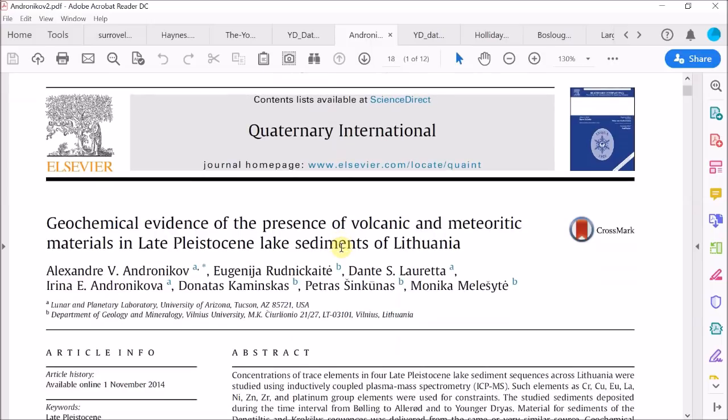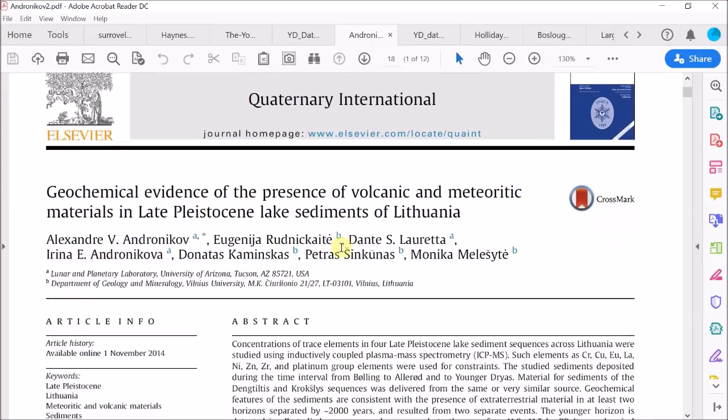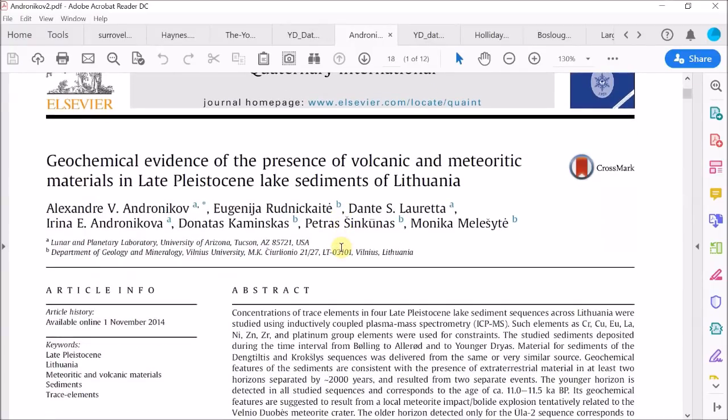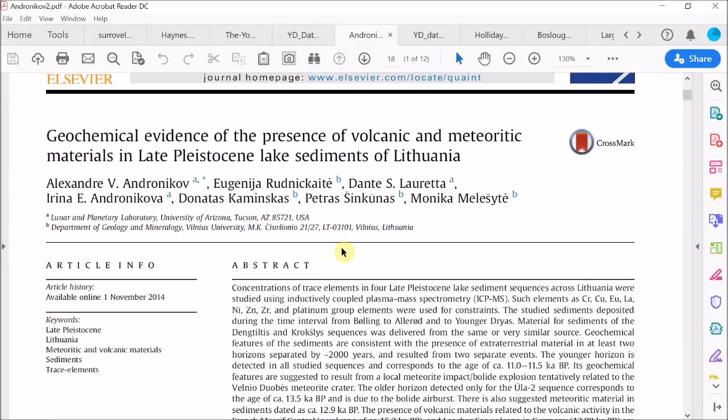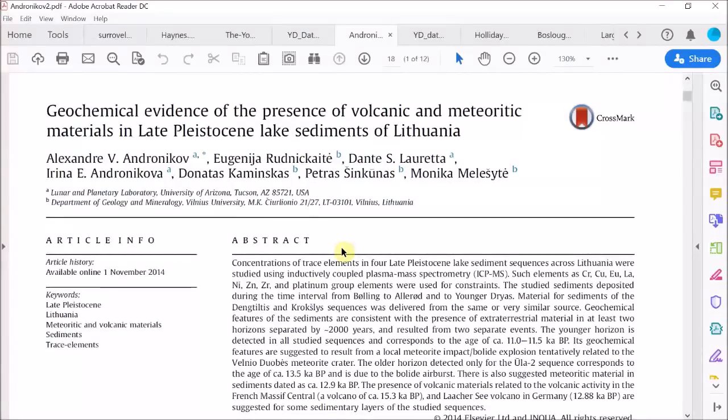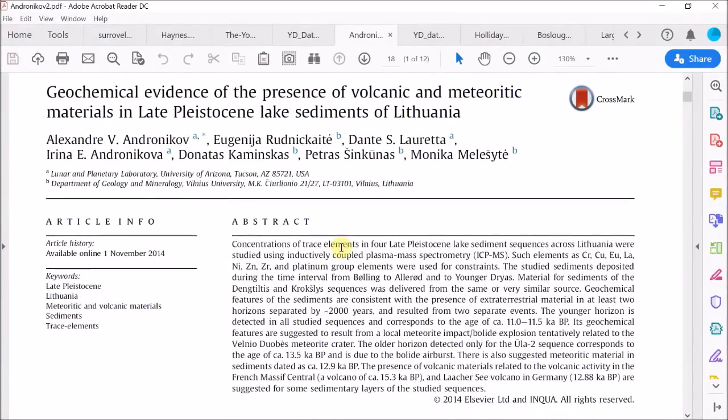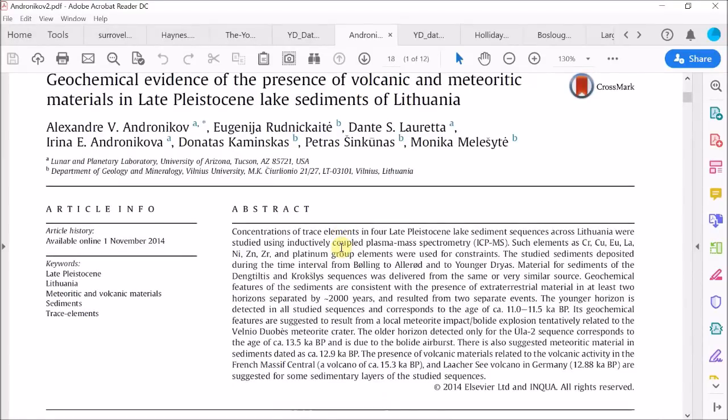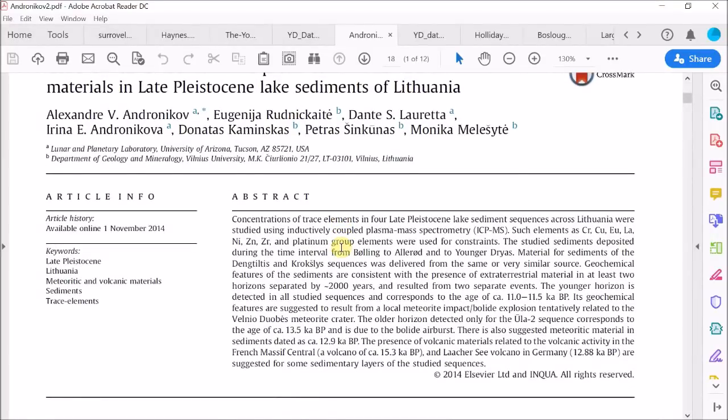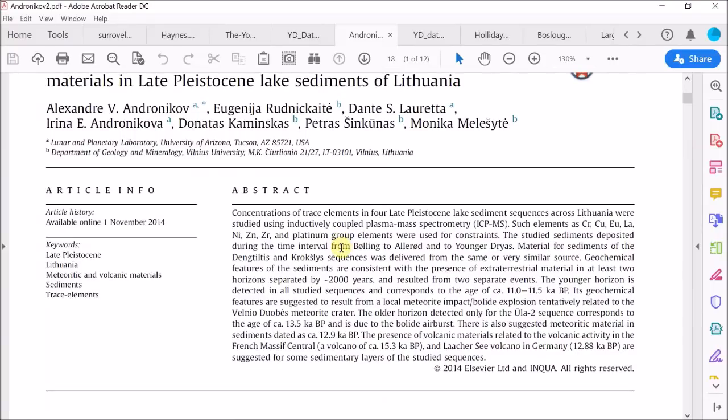Now here they're looking at four lake beds in Lithuania and they use mass spectrometry to analyze the abundances of a wide range of elements, including platinum group elements. If spikes in several of these platinum group elements are found, then they say this would indicate a cosmic impact.